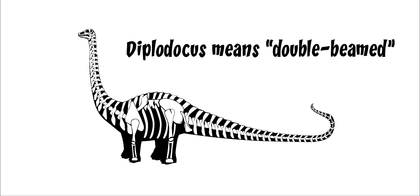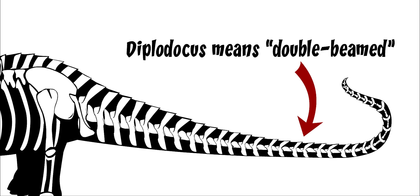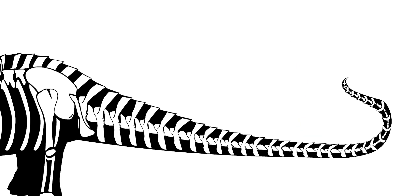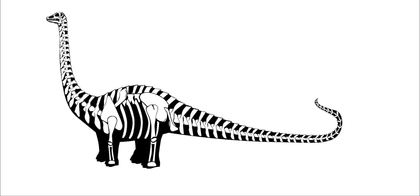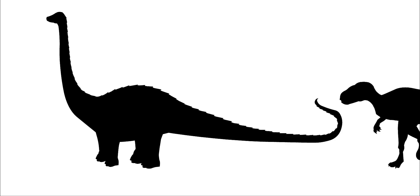The name Diplodocus means double-beamed. This unusual name comes from the bones on the bottom of its tail. The vertebrae along its tail had extra T-shaped bones pointing downwards. These strange bones let Diplodocus hold its long tail straight out behind it. With this extra support, Diplodocus could move its tail around like a whip. It was useful for balance and also for protection against hunters.